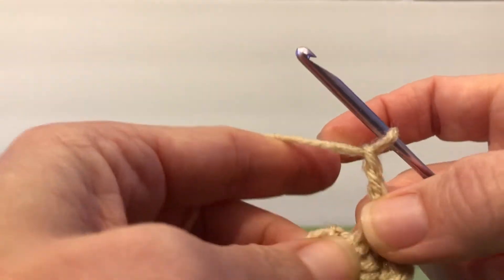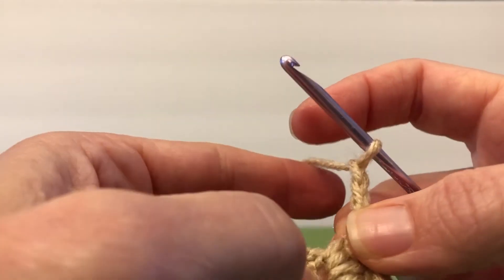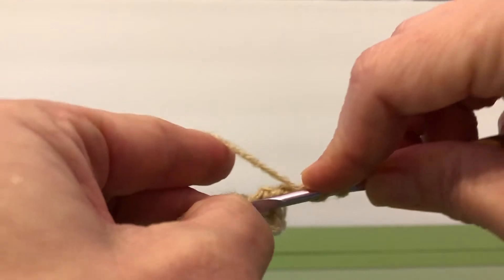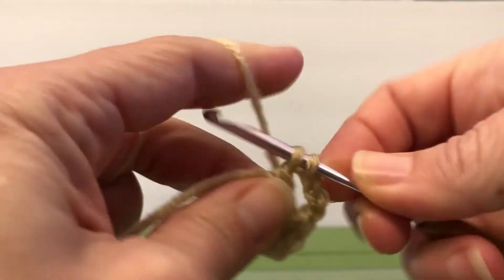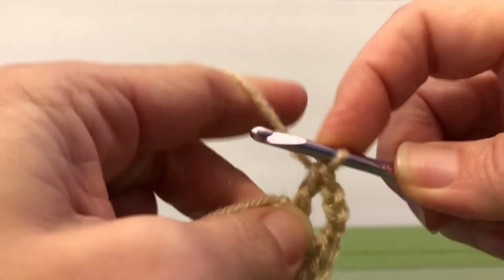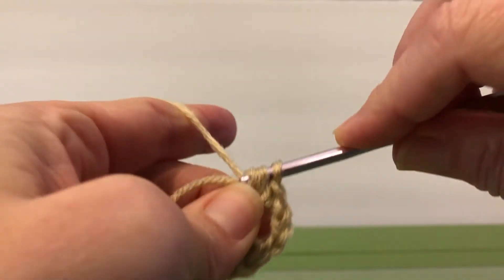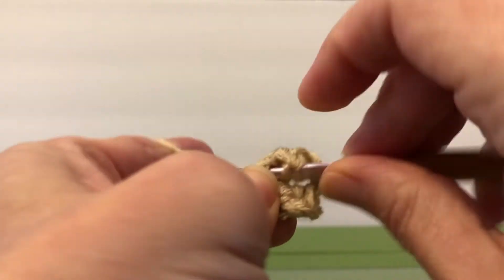So now we're going to go in, we're going to make granny cluster number two, and we're going to do three double crochets into the hole here that we had made in the center. I'm going to enter. Here's one, here's two, and here's three. So this is our second granny cluster.